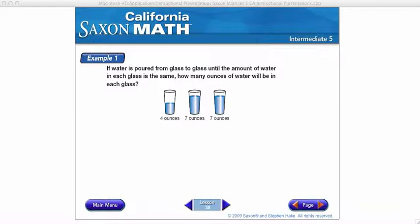For example, number one says, if water is poured from glass to glass until the amount of water in each glass is the same, how many ounces of water will be in each glass? So cup one has four ounces, cup two and cup three both have seven ounces.